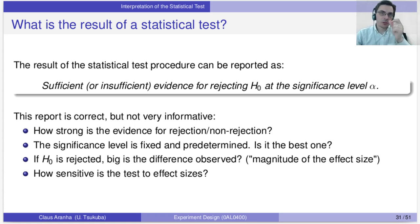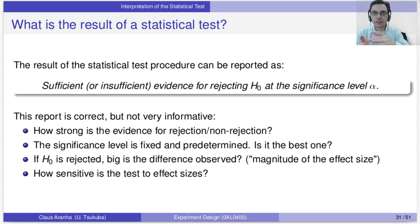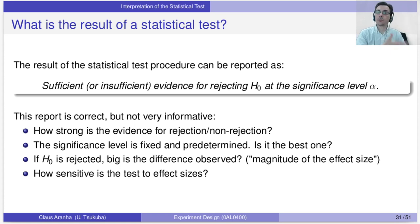Now let's say that the null hypothesis was rejected — how big is the difference that was observed? Remember we're talking about being interested in at least five grams or ten grams. What is the effect size that was observed? And if I failed to reject the test, how sensitive was my test? What kinds of effects could have passed under the radar? All this is extra information you might want when looking at an experiment report.